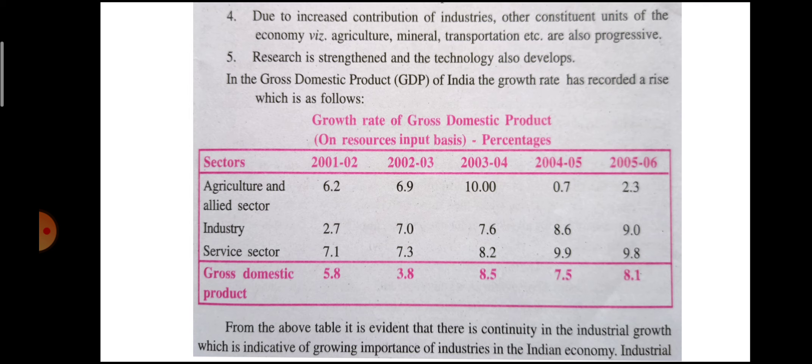Fourth: due to increased contribution of industries, other constituent units of the economy — namely agriculture, trade, and transportation sector — also become progressive. Fifth: research is strengthened and technology also develops. Looking at the table of growth rate in gross domestic product, sectors include agriculture and allied sector, industry, and service sector.